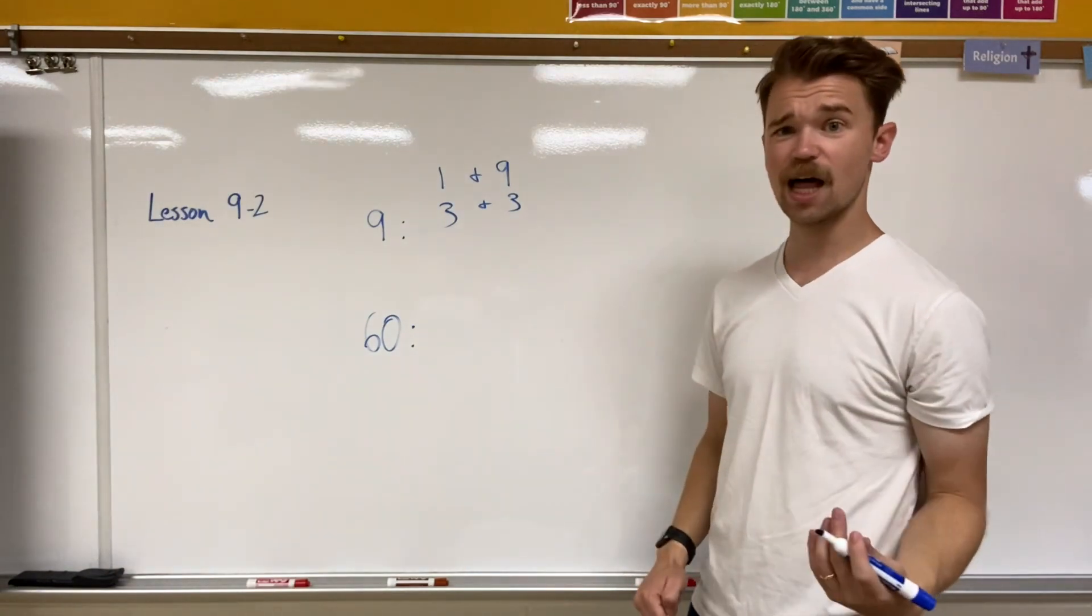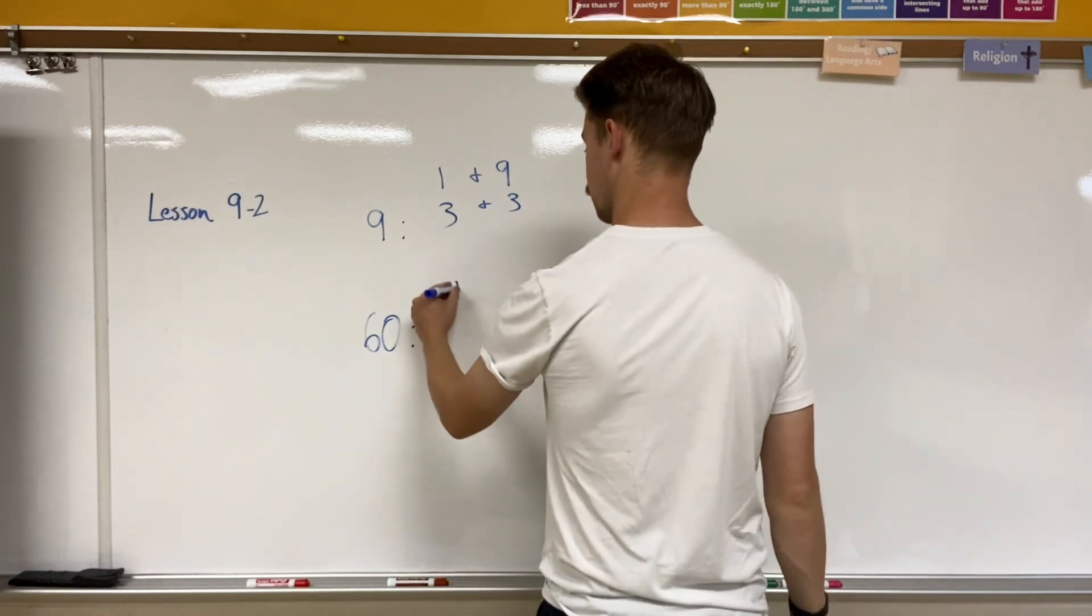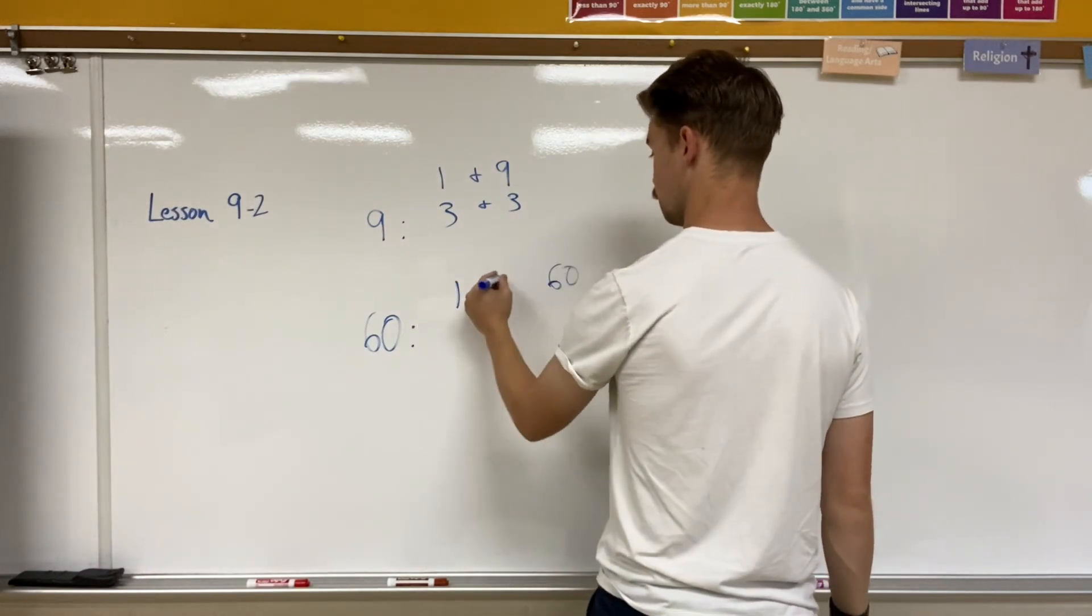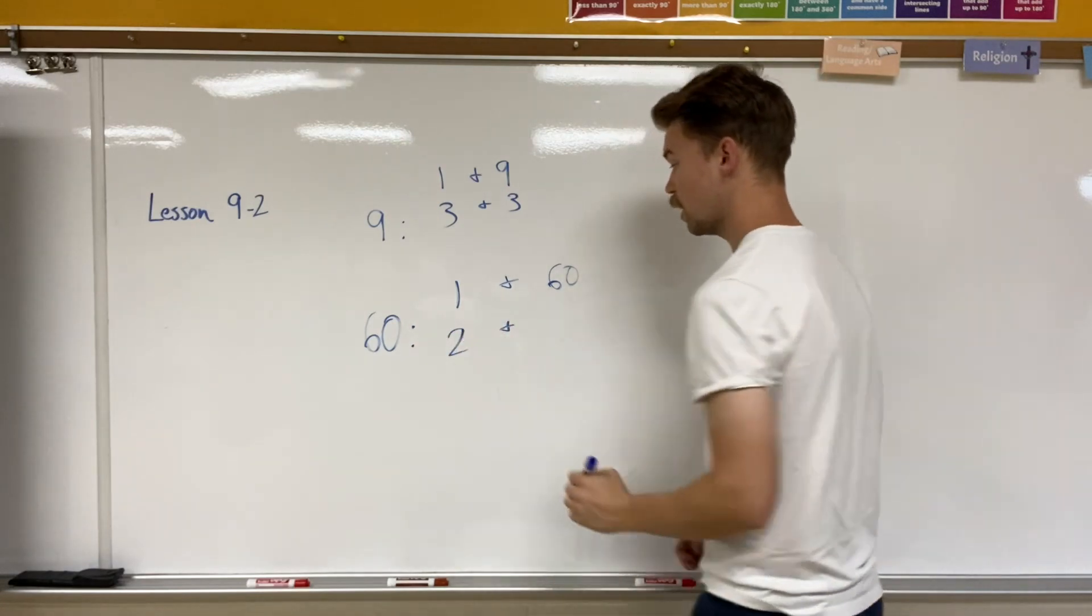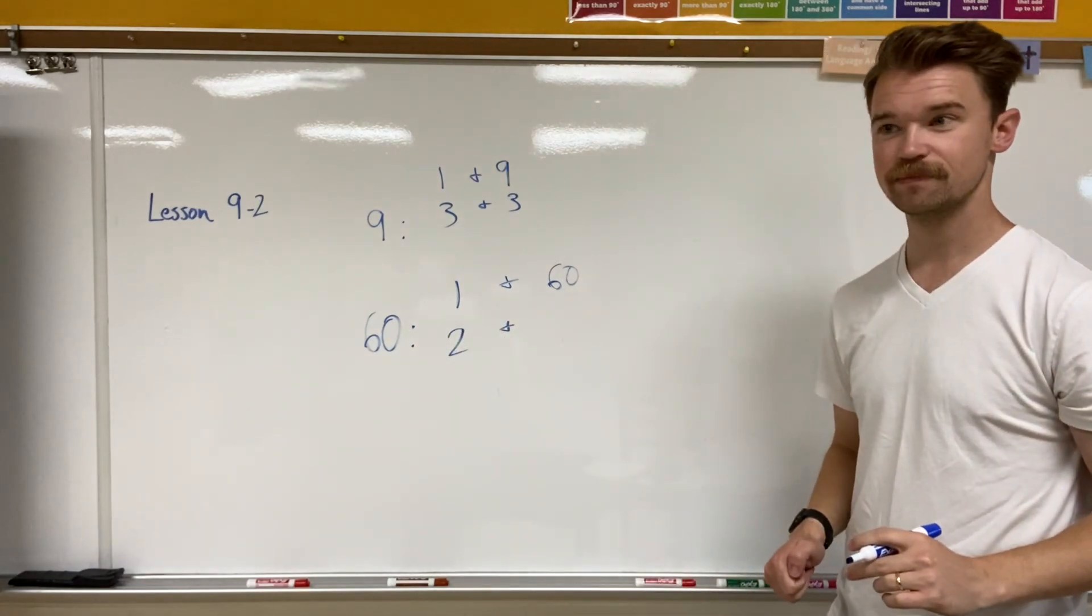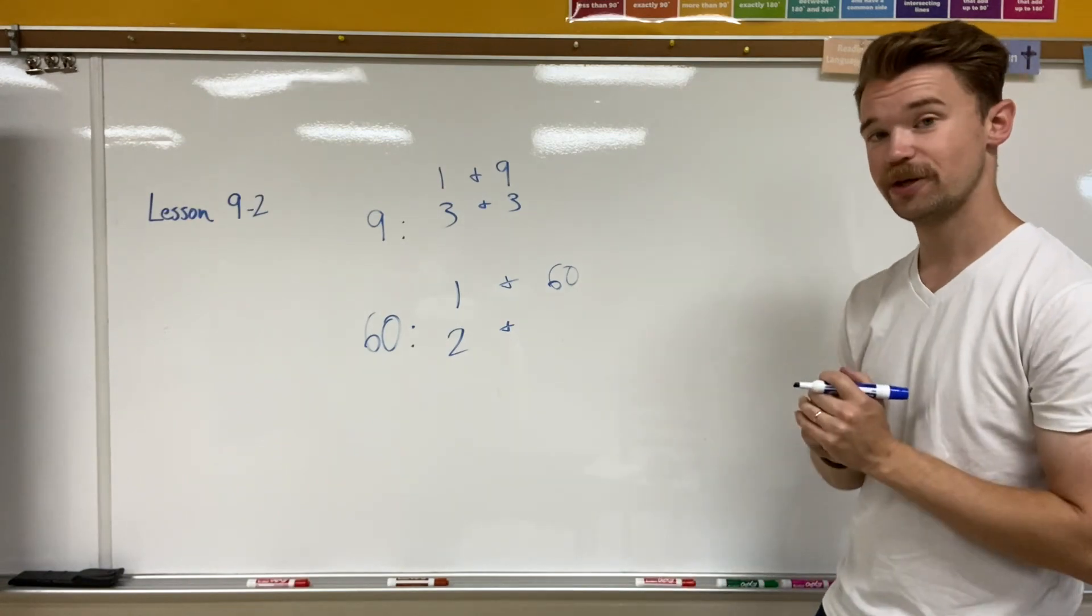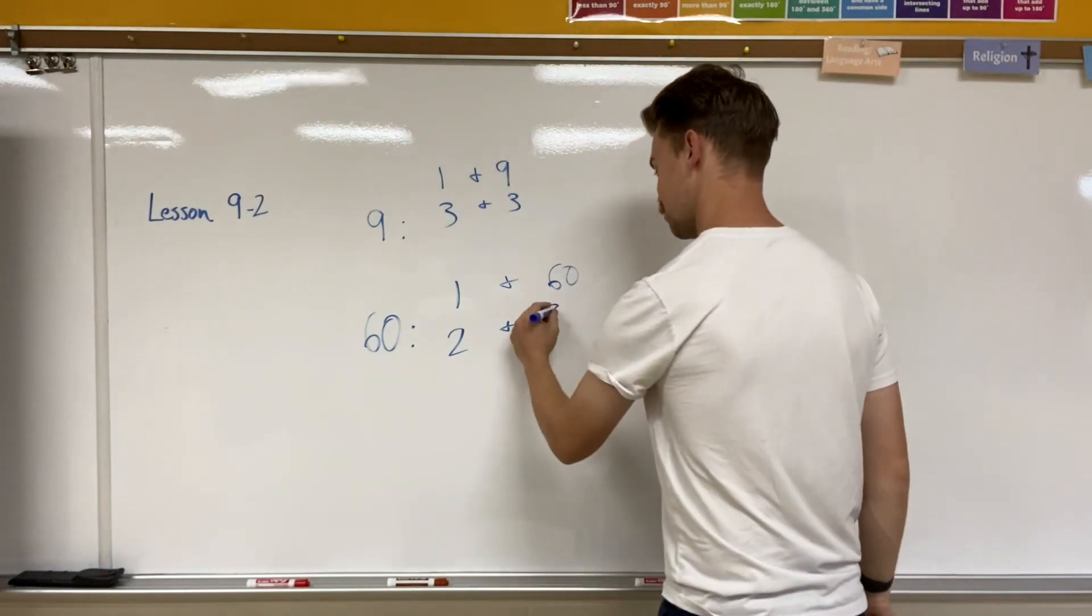Now with 60, it has a lot more factor pairs. We know that one times anything is itself. We know that 60 is also an even number. So I can have two, two times, well, what's half of 60? Splitting into two groups. It's 30. Two times 30.